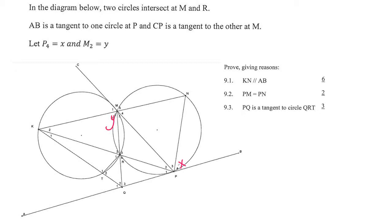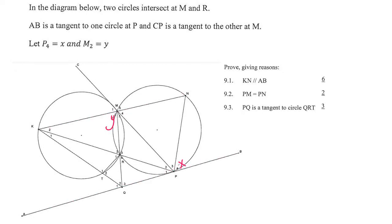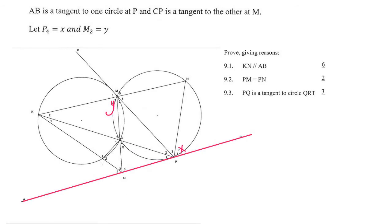For six marks we have to prove that line KN is parallel to AB. There might be other ways of doing this, but one way is by using tangent AB and chord PN — then by using the tan-chord theorem we can prove that angle M4 is also equal to x.